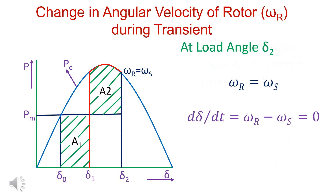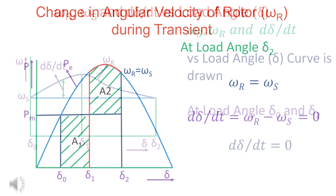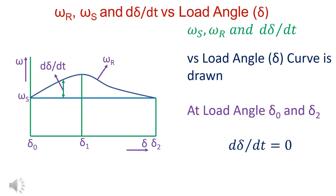At load angle delta_2, omega_r is equal to omega_s; therefore, d(delta)/dt is equal to 0. At load angles delta_0 and delta_2, d(delta)/dt is equal to 0.